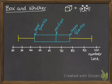Then we add in the whiskers on either side, and those are the lowest value we have in our data set, and the highest value.